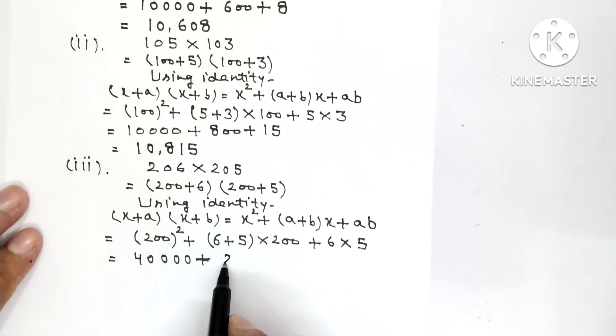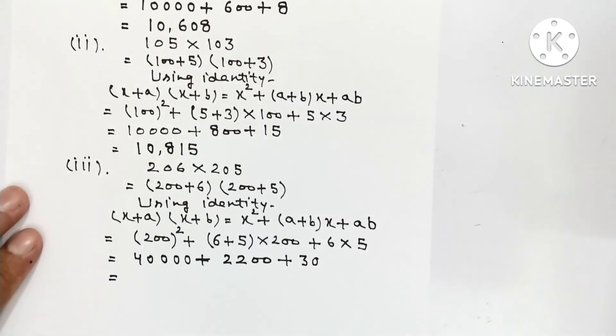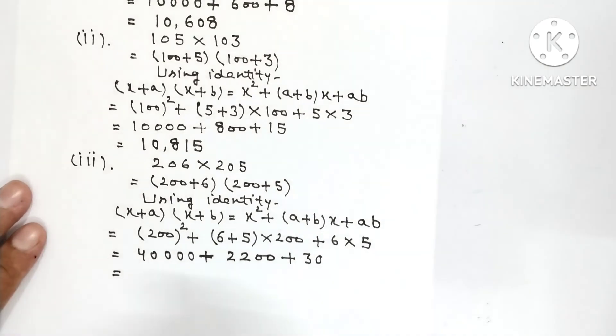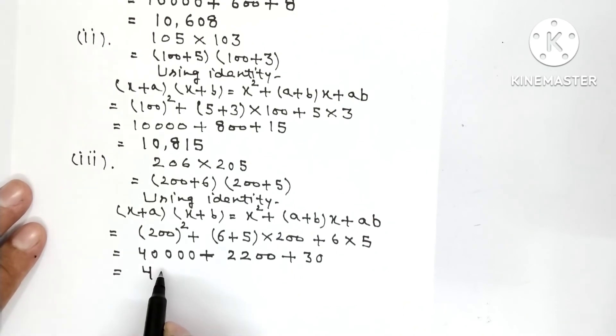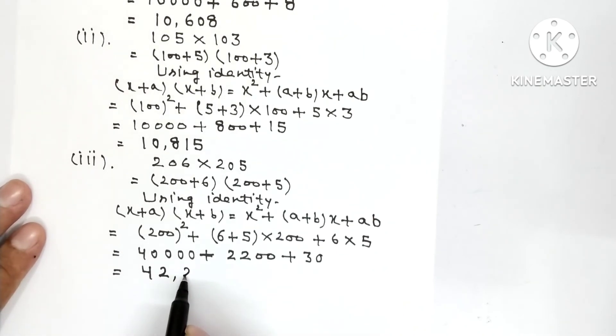So 200 square is 40,000 plus 6 plus 5 is 11, 11 × 200 is 2200, plus six fives are 30. So 40,000 add 2200, add 30, it will be 42,230.